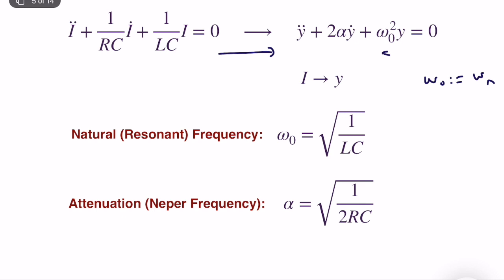We also have alpha, called the attenuation coefficient or Neper frequency. For this parallel RLC circuit, alpha equals one over 2RC. Depending on the relationship between alpha and omega-naught, we will have different behaviors in the analysis.